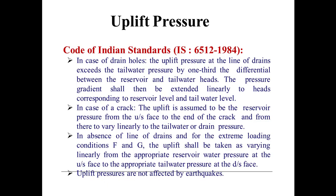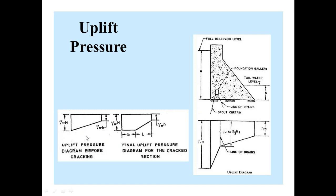Uplift pressures are not affected by earthquakes. In the case before cracking, the total uplift pressure diagram will be trapezoidal in shape. At the upstream point, the total uplift pressure equals γw × H, while at the downstream point it equals γw × h, where capital H is the upstream water height and small h is the tailwater height. For the cracked section, the uplift pressure diagram changes shape: at the upstream point the uplift pressure equals γw × H, and the diagram varies to γw × h at the downstream end.